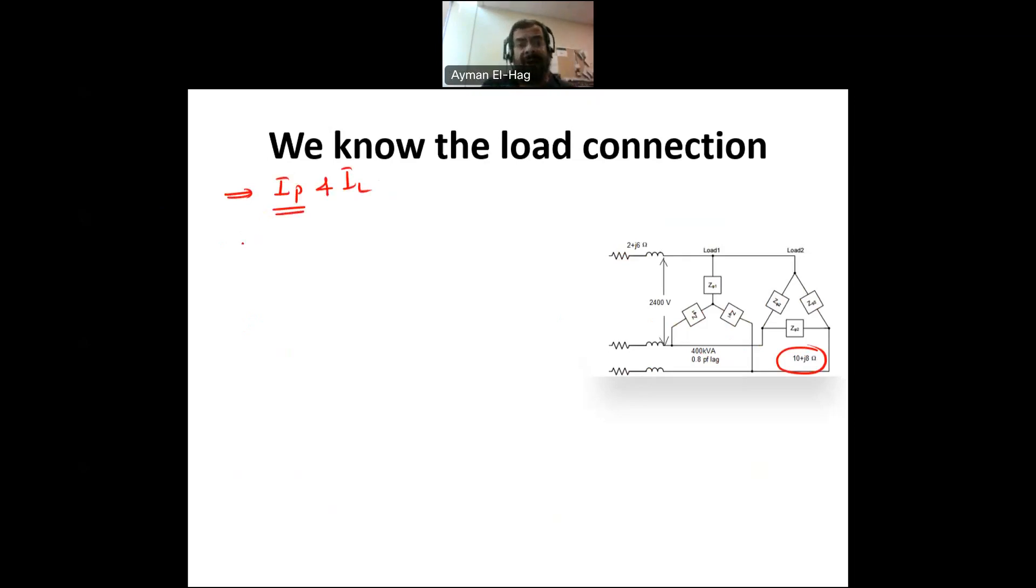So you will find that the power of that load will equal to 3 Ip squared times R of the load. In this example, it's 10 ohm. Why 3? Because it is 3 phase. And Q of the load will equal to 3 I phase squared times X of the load. This will give you your Q. So now I know P and Q of that load.